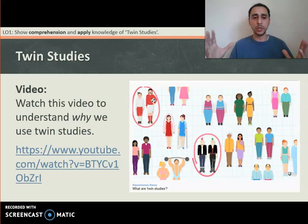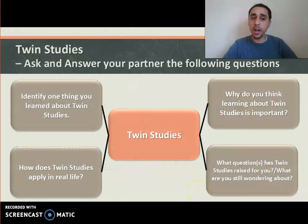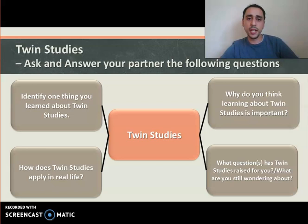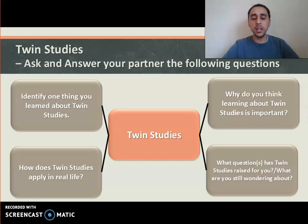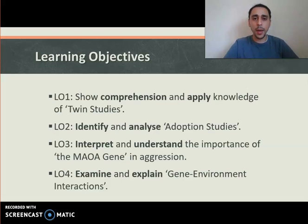So how do we disentangle nature versus nurture — genetics versus environment? That was twin studies. Identify one thing you learned. This isn't the first time we've looked at twin studies — we use them to understand different types of behaviours, whether that be attachment types, schizophrenia, or social influence, to disentangle environmental factors from genetic factors. Learning objective one — show comprehension and apply knowledge of twin studies — tick.